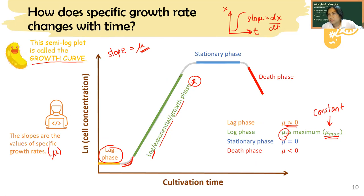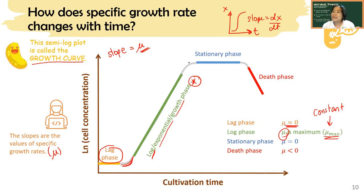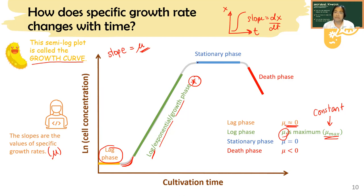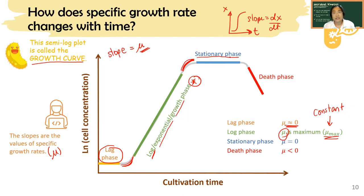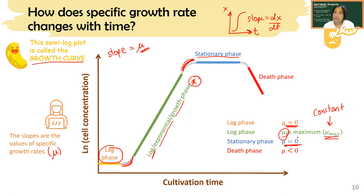When the cell continues growing, at some point it has to stop because in a fermentation, when you have cells and substrate, the substrate depletes, and the cell has to stop because there's no substrate left. This part is sometimes called the deceleration phase — the speed starts decreasing. After a while, it enters the stationary phase, where μ equals zero again, similar to the lag phase, but here μ is zero because there's nothing left to eat.